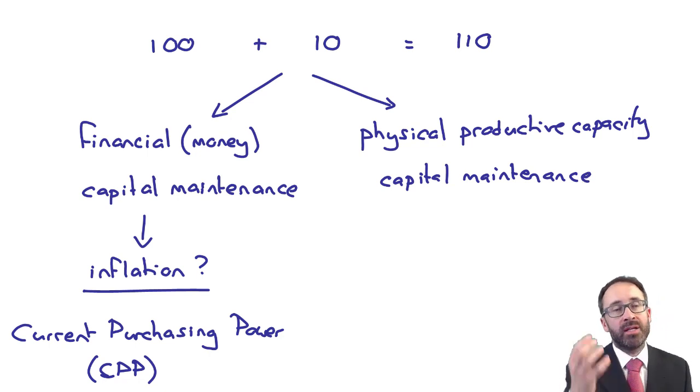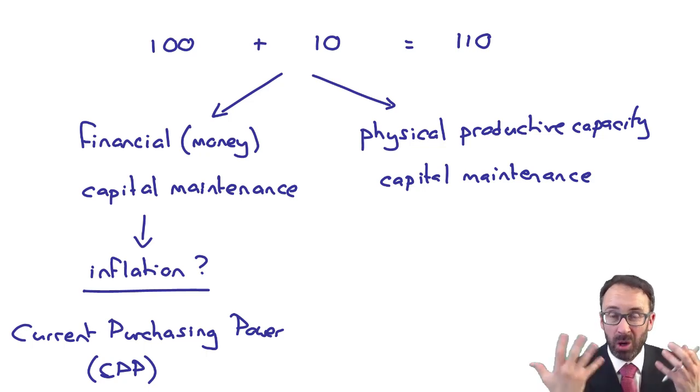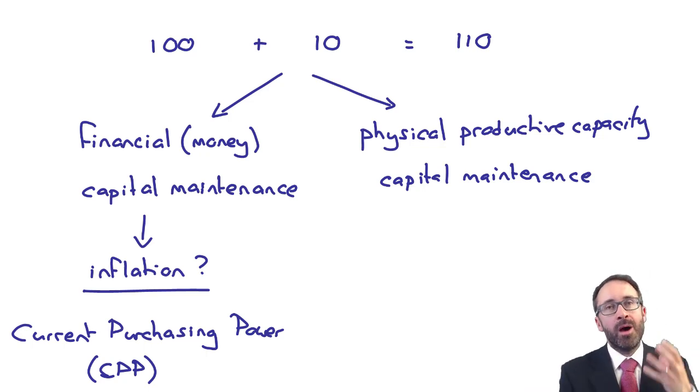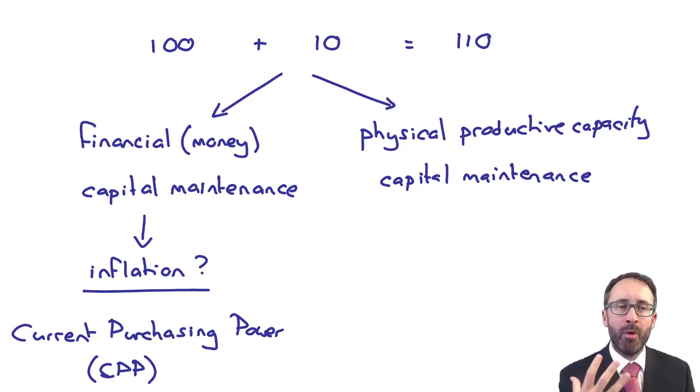Again, what we're asking ourselves there is we're saying look, the closing capital is greater than the opening capital, so it looks like we've made a profit. But with that closing capital, could we actually buy more units of a specific asset than what we could at the start of the year?